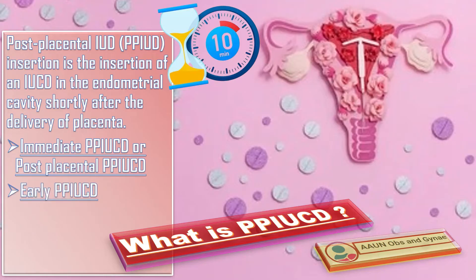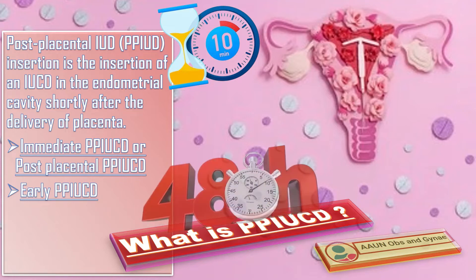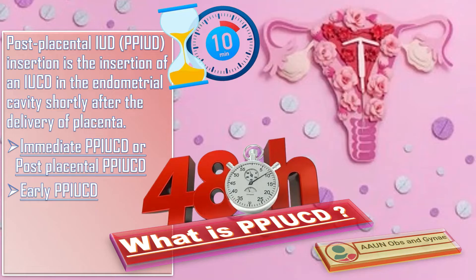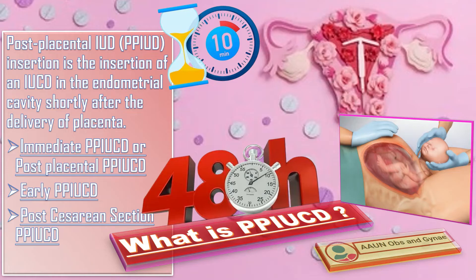Early PP-IUCD is when it is inserted within less than 48 hours of delivery. Post-cesarean section PP-IUCD is placed during cesarean section, after the removal of placenta, in the uterus before closing the uterine stitch line.